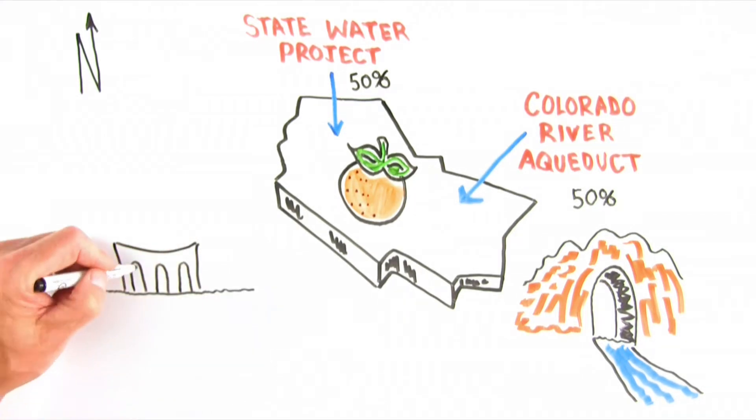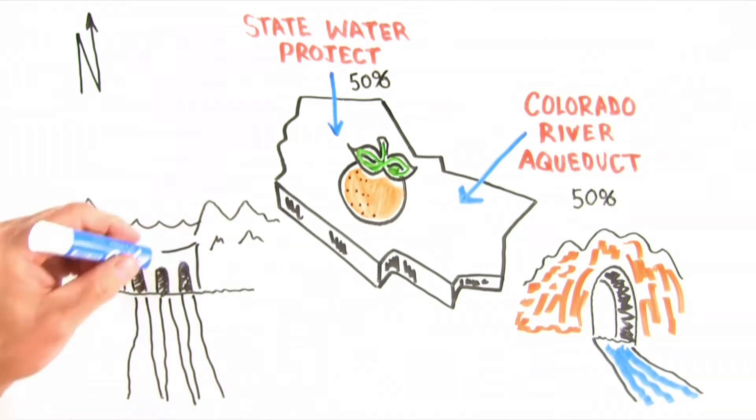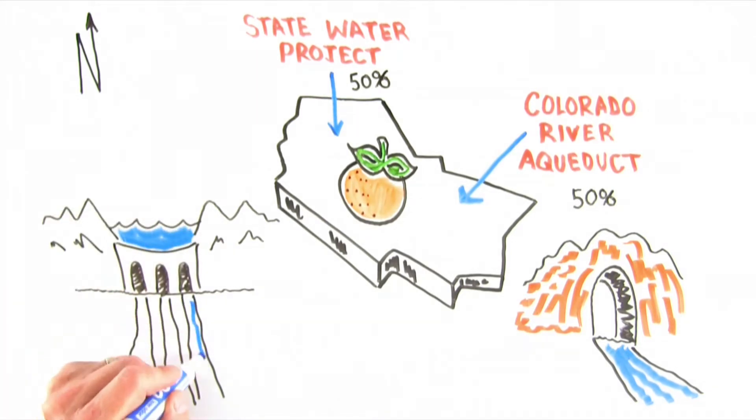It is an engineering marvel constructed 75 years ago to ensure Southern California would have a reliable supply of water.